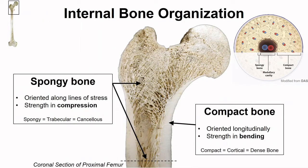Let's take a closer look at the proximal end of this femur. Spongy bone is found in the ends of bones and lining the medullary cavity. While this organization of spongy bone looks erratic, it's actually very well organized along lines of stress and areas of compression.